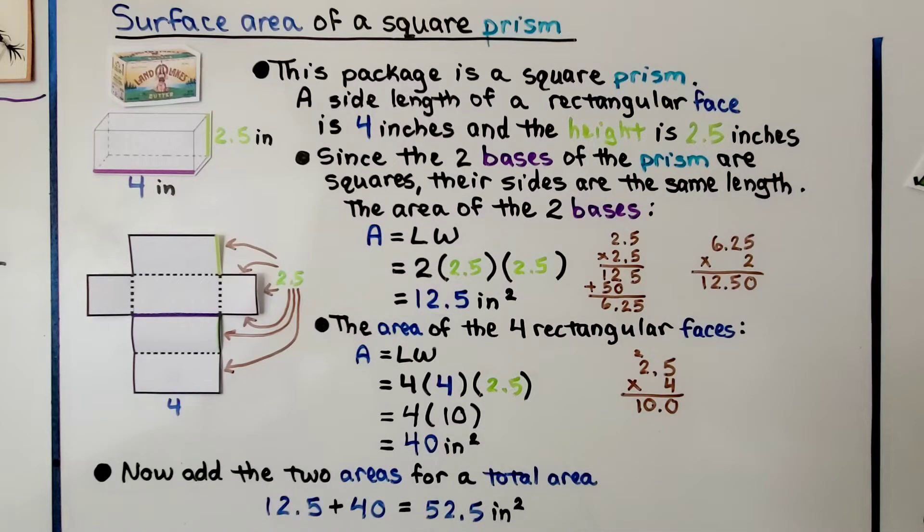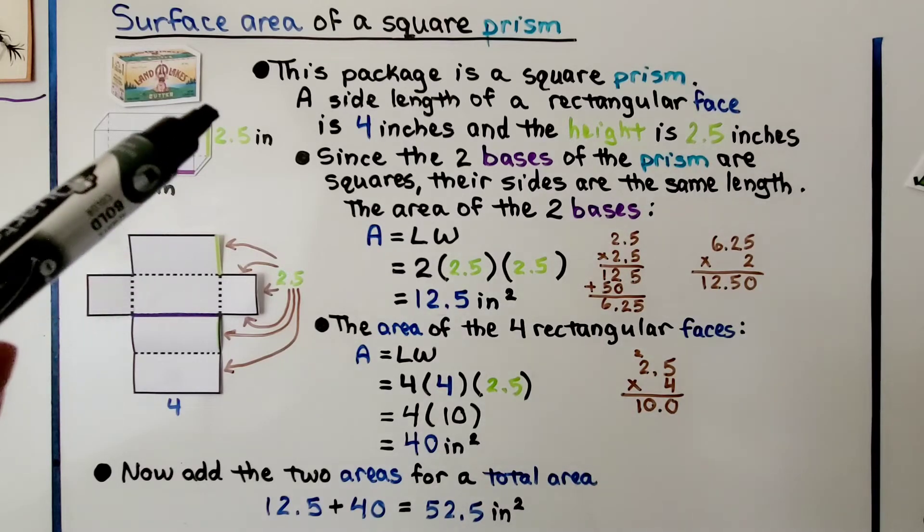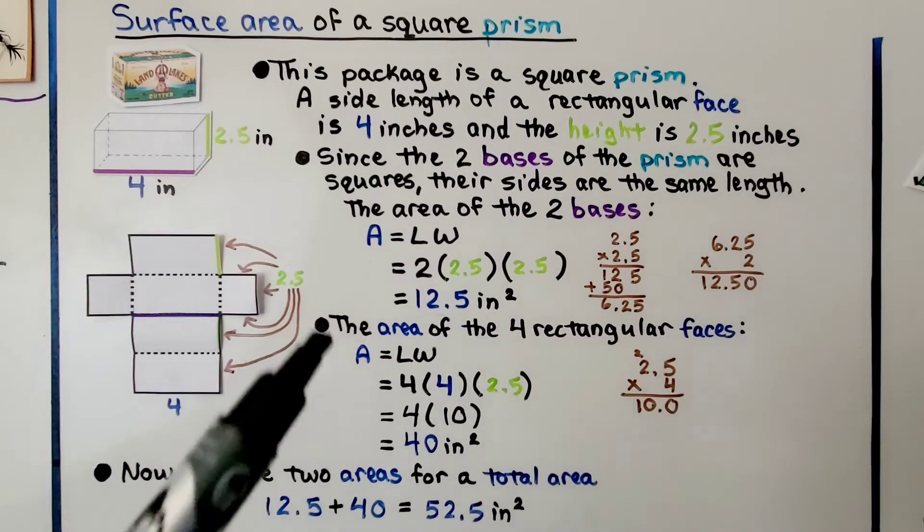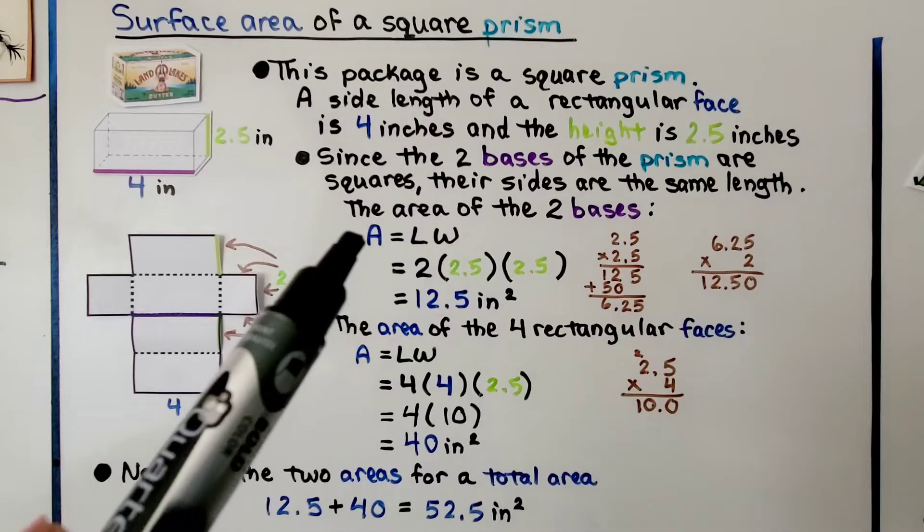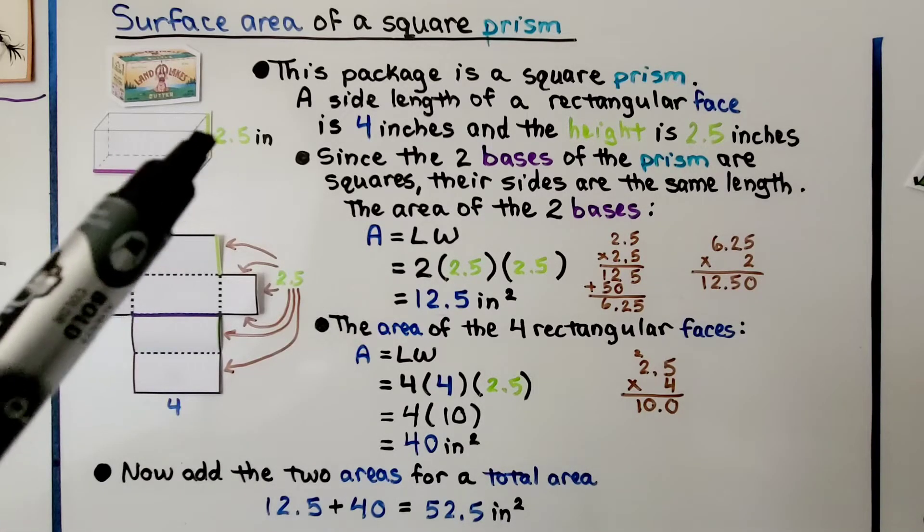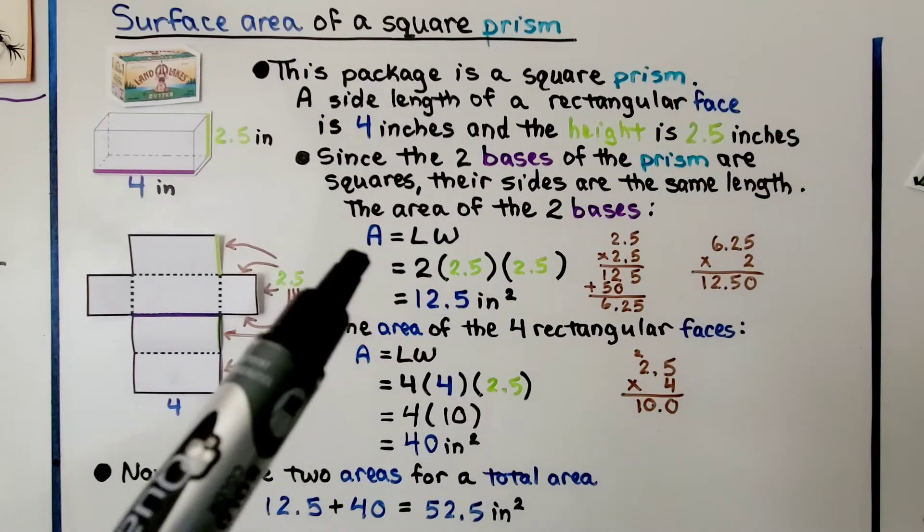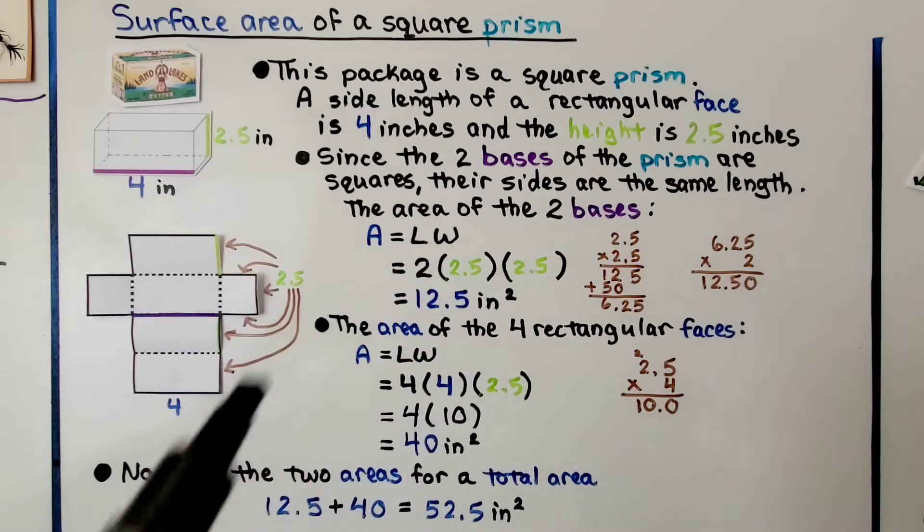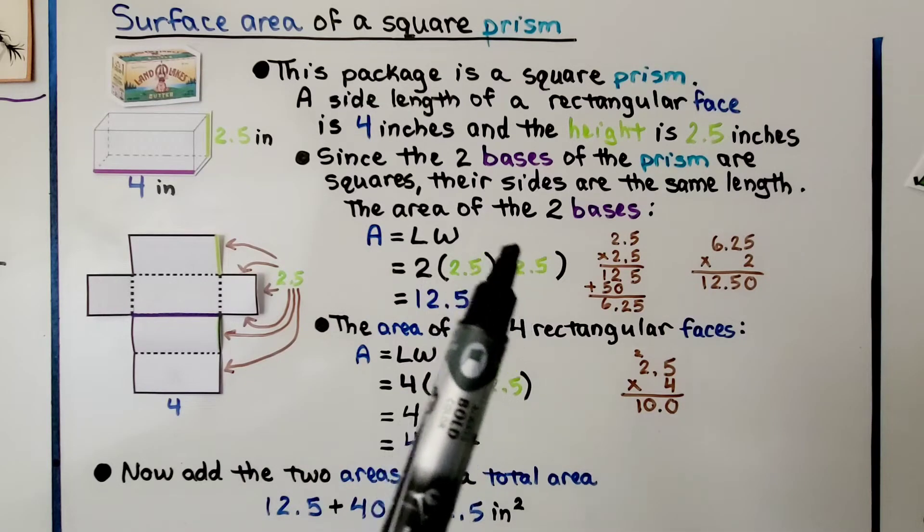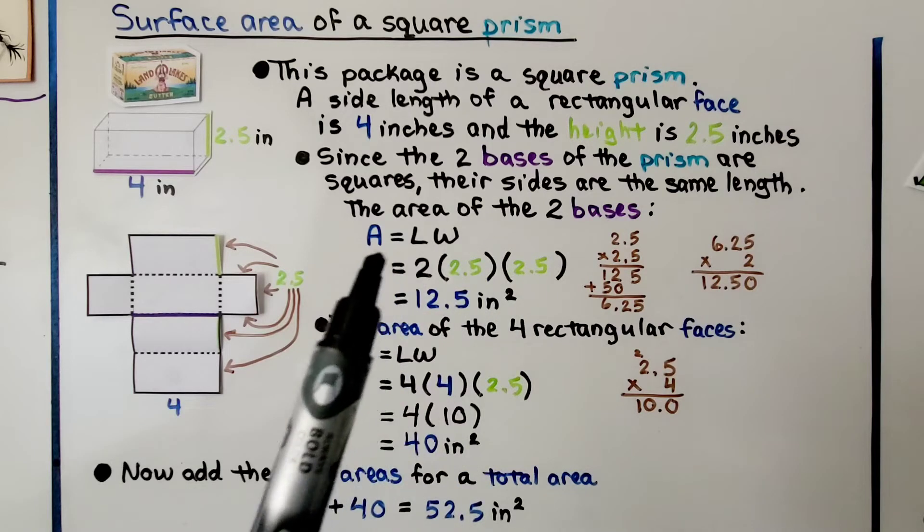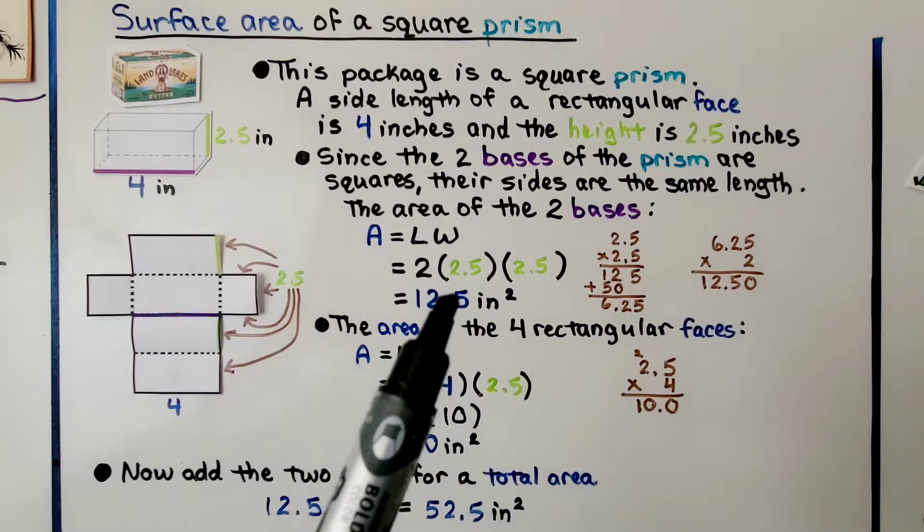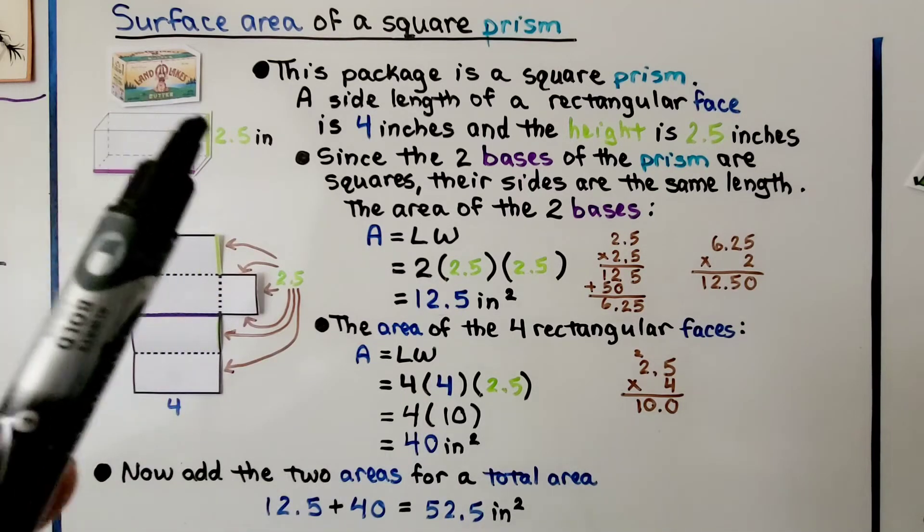Since the two bases of the prism are squares, their sides are the same length. If this is 2.5 inches, then this down here must be 2.5 inches, and the area would be length times width for the square base. We have two of them, two square bases, so we're going to do 2 times 2.5 times 2.5. The 2.5 times 2.5 gives us the area of one square, but we have two squares. That's 12.5 inches squared for these two side bases.